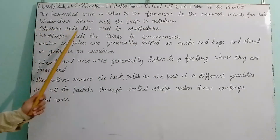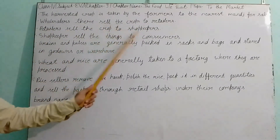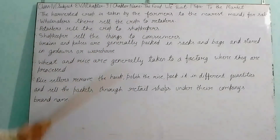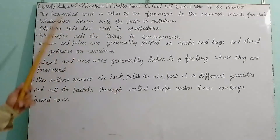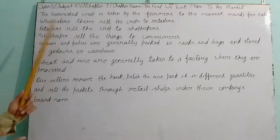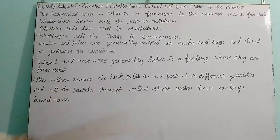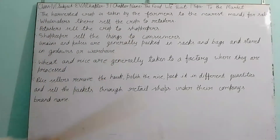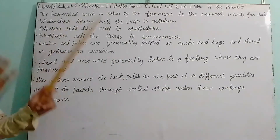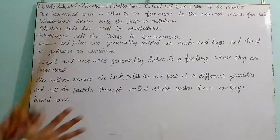Retailers sell the crops to the shopkeepers. Retailers can be of two forms — one is near the small wholesaler, and the second is the retailer who sells the crops to the shopkeepers. So it is a chain, it is a process.